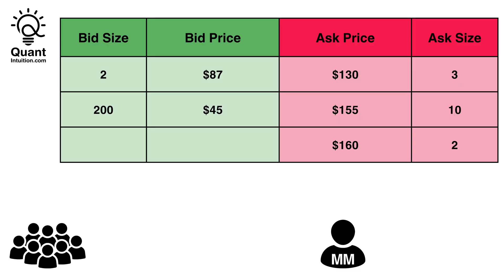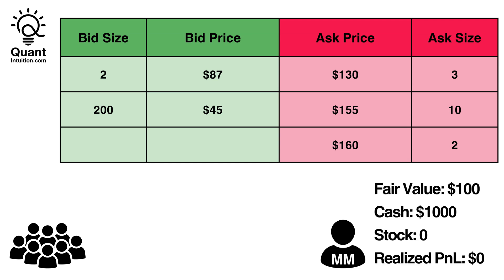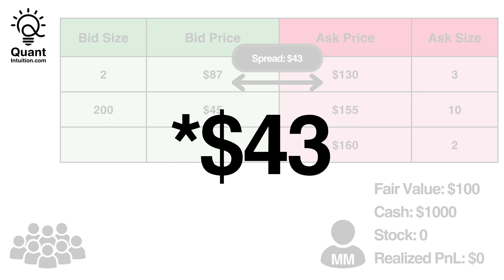To illustrate this further, let's step through an example sequence of trades from a market-maker's perspective. Consider this order book of a hypothetical stock and imagine you are the market-maker. Currently, there are two bids: one for $87 with a volume of 2, and one other bid for $45 with a volume of 200. Furthermore, the best ask is $130 with a size of 3. Someone else is offering $10 for a price of $155 and $2 for $160. Let's assume your sophisticated model outputs a fair value of $100 for this product, and this does not change throughout this video. You currently have a cash position of $1,000 and no open stock position, so your P&L is $0.